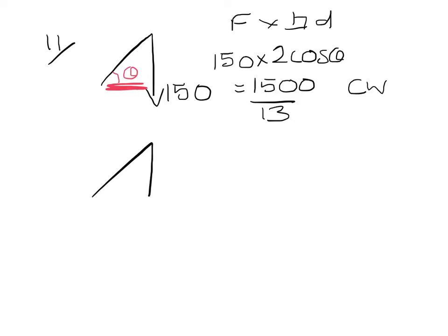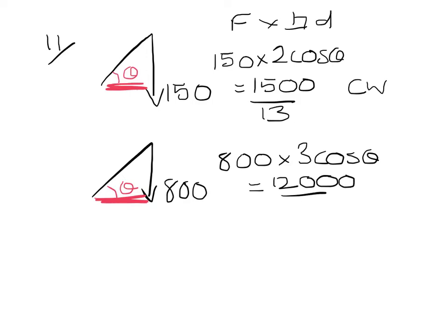Next force is the weight of the man, 800. Again the perpendicular distance is beside the angle so I am going to be using cos. So my moment is 800 times 3 cos theta which gives me 12,000 over 13 and this is also in a clockwise direction.